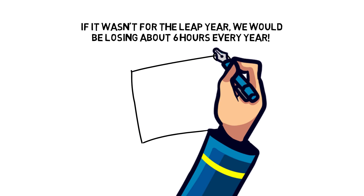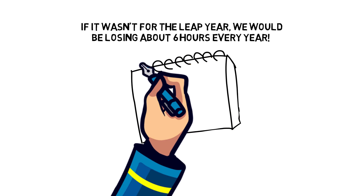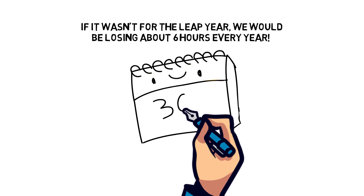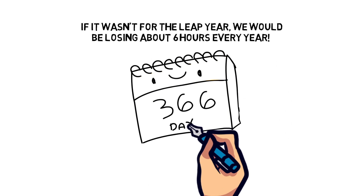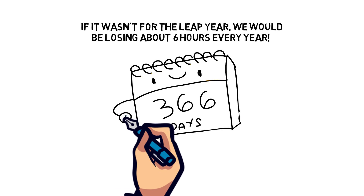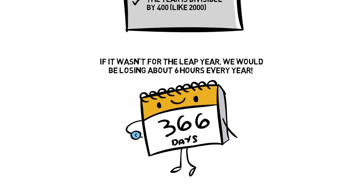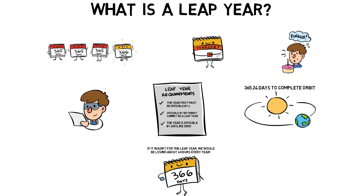If it weren't for the leap year, we would be losing about six hours every year. It might not seem like a lot now, but in 100 years our calendar would be off by about 24 days. It may be one day every four years, but it sure does help to keep our calendars in line. So that answers: what is a leap year?